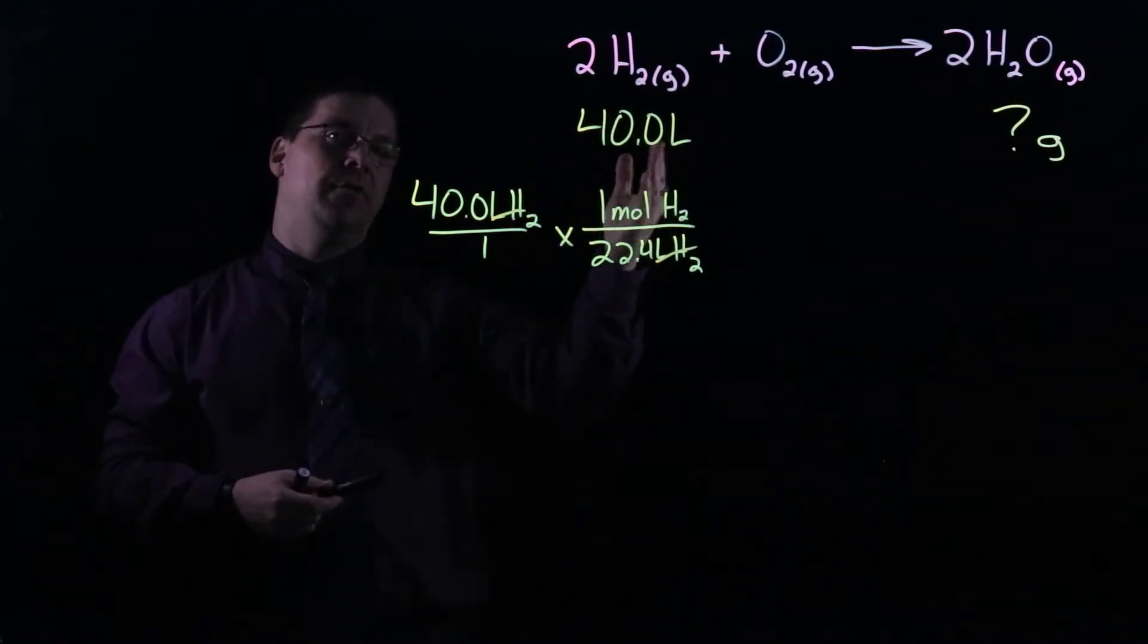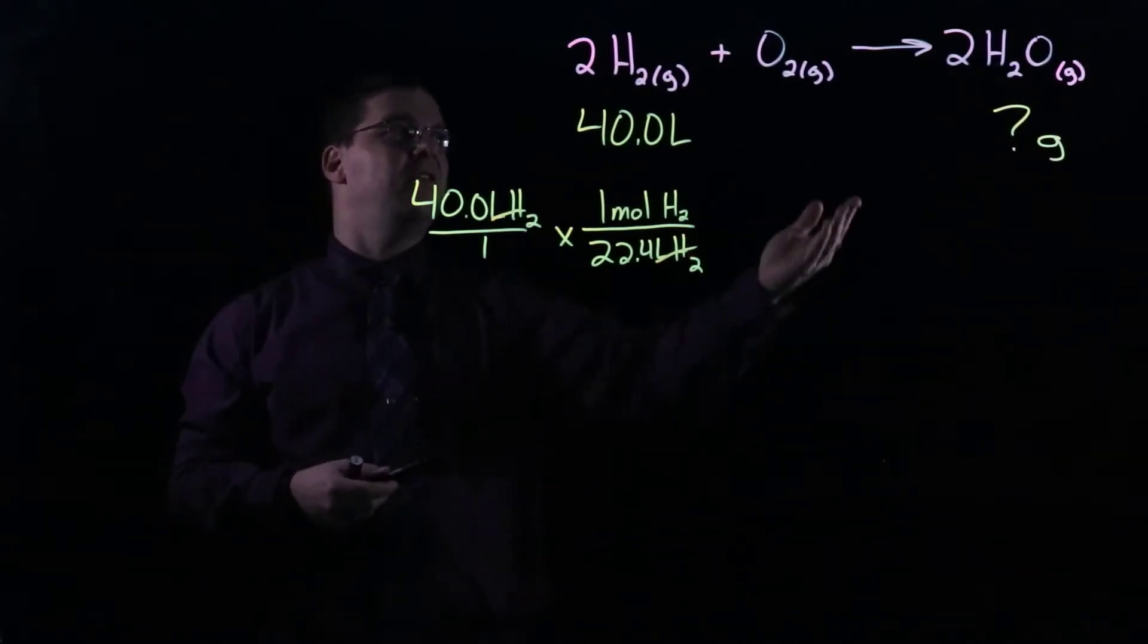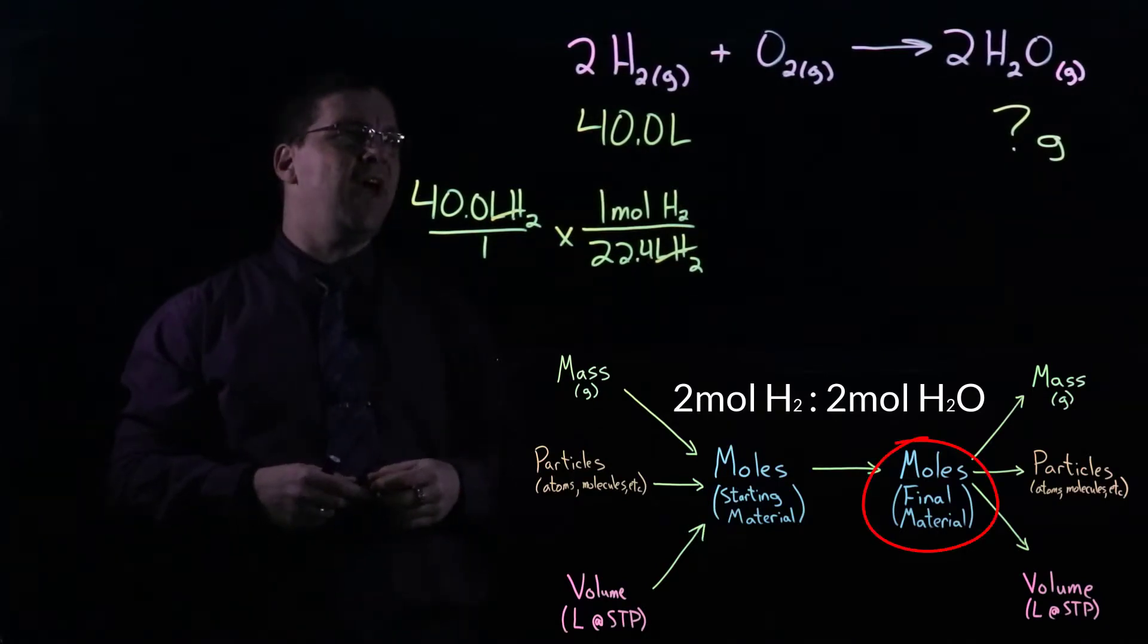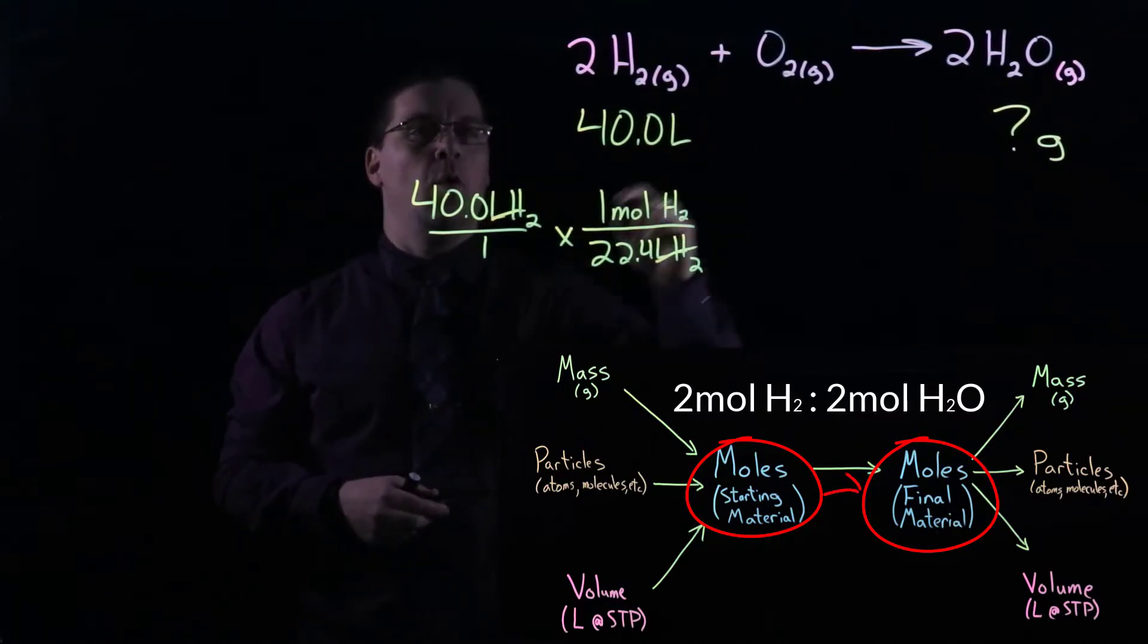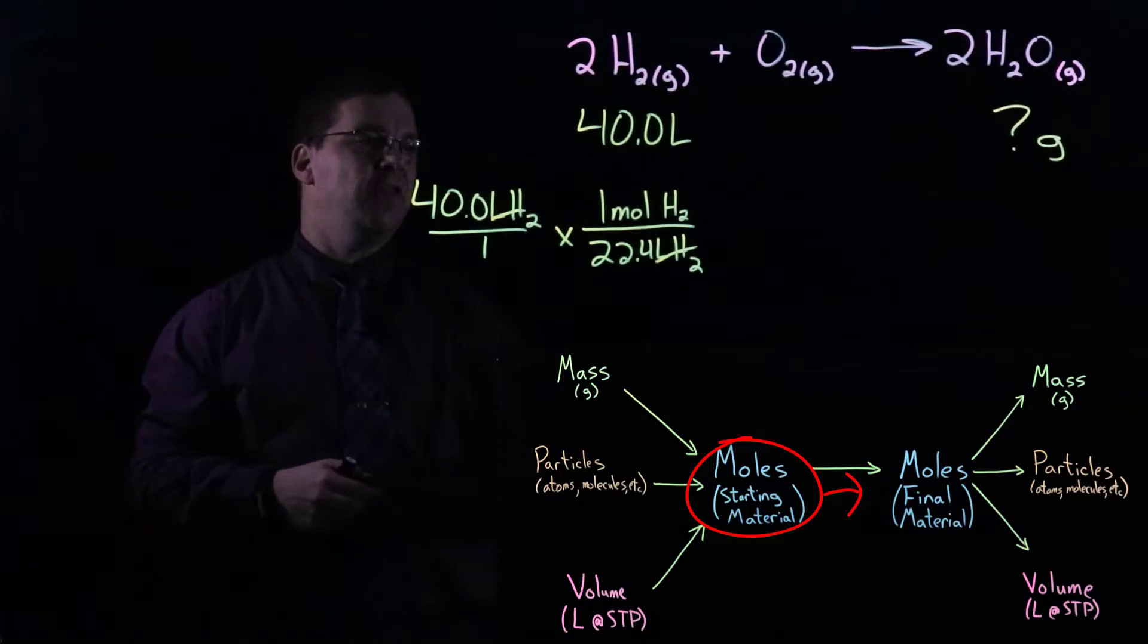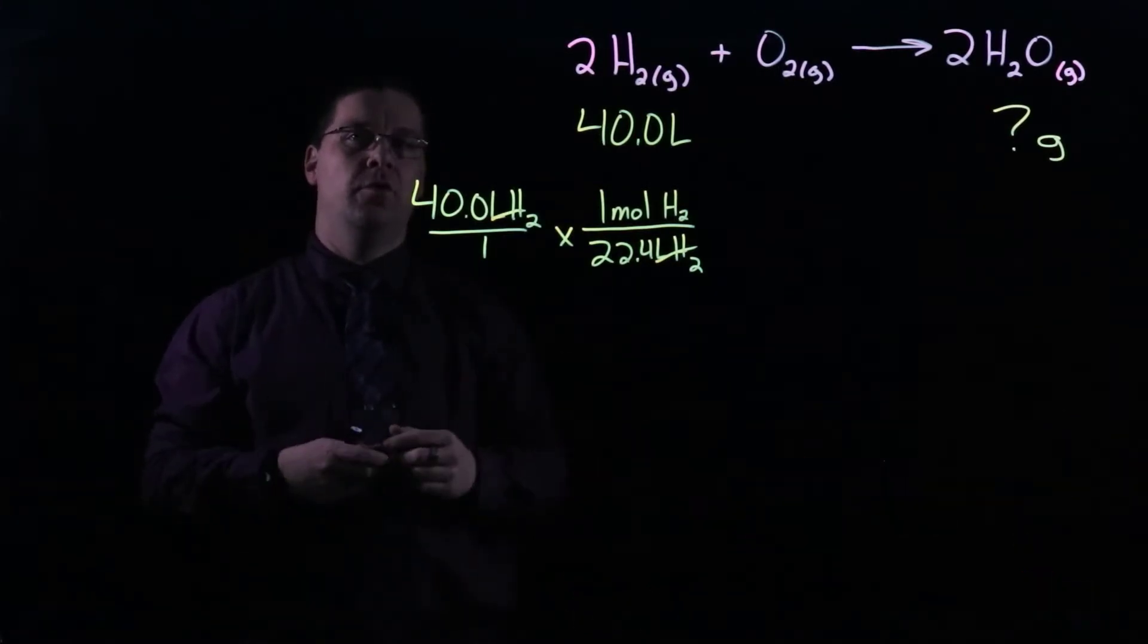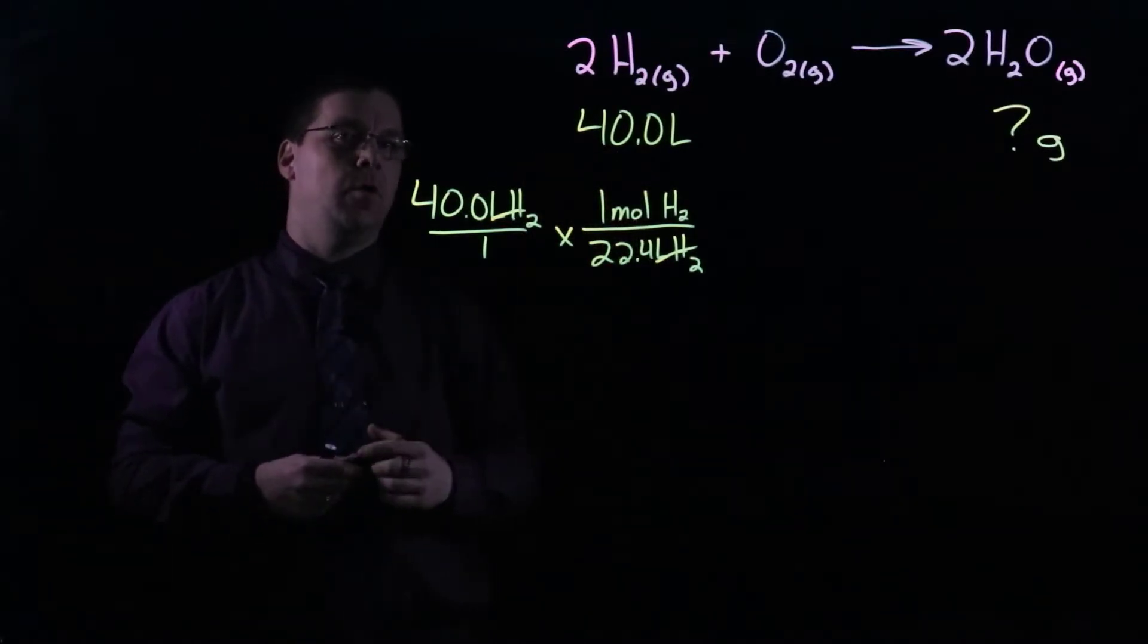And now we need to look to our recipe, our equation, and determine what's the relationship between this particular reactant and the product that we're looking for. And in this case, we have two moles of hydrogen for two moles of water. So essentially, it's a one-to-one ratio. But the next step that we write is going to be a ratio of those moles. The final material will go on top. The starting material will go on the bottom.